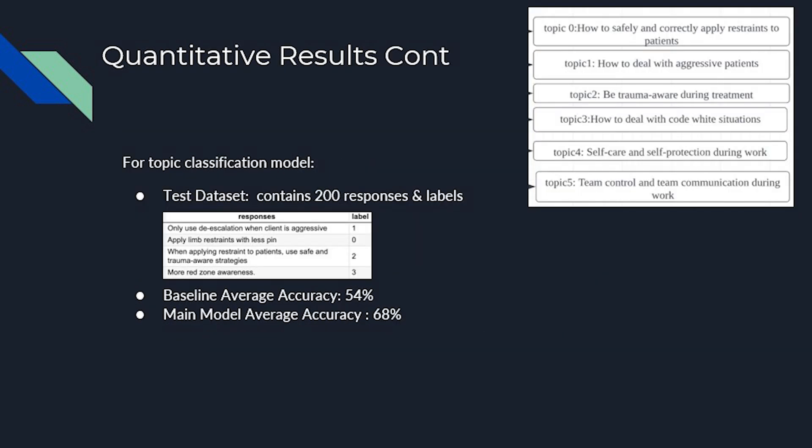For the topic classification models, we use 200 responses with their topic labels. The baseline achieves an average accuracy of 54%, and our main model achieves 68% accuracy.